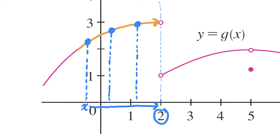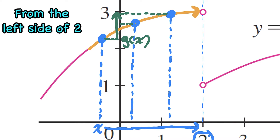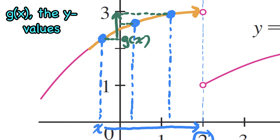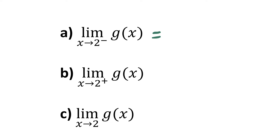As these x values approach 2, what's happening to the y values of the function? The first y value of g(x) is there on the y-axis. The next point, closer to x=2, has a y value a little bit higher. And the last one I drew has a y value just below 3. So the y values seem to be trending towards 3. As x approaches 2 from the left, g(x) is approaching 3. My answer to Part A is 3.